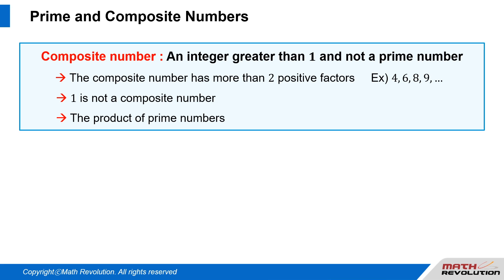Remember that a composite number consists of the product of prime numbers. This appears in the exam from time to time. That is, a composite number equals the product of prime numbers.